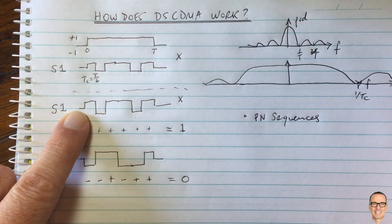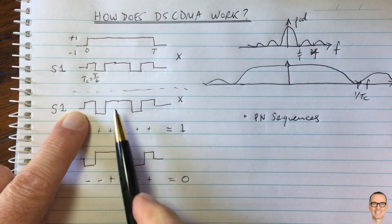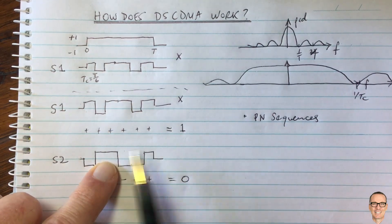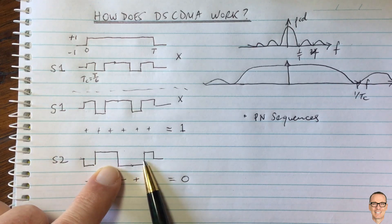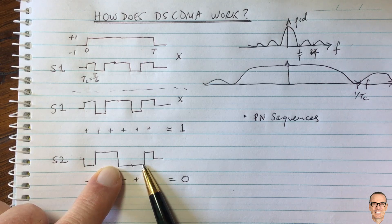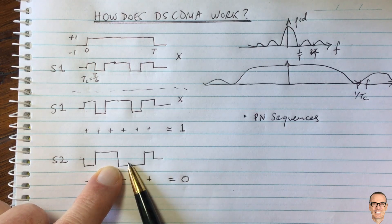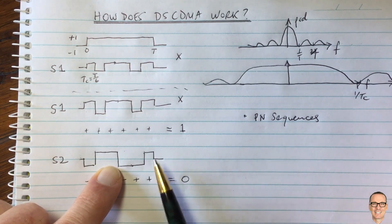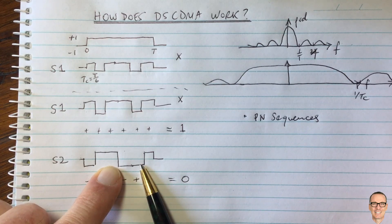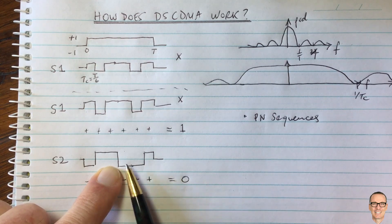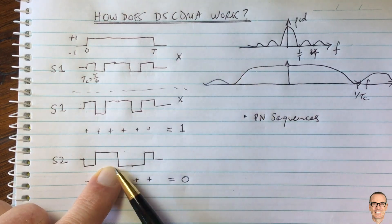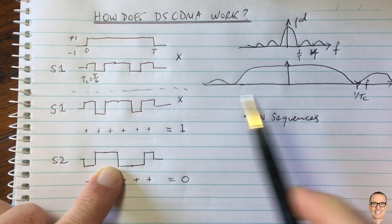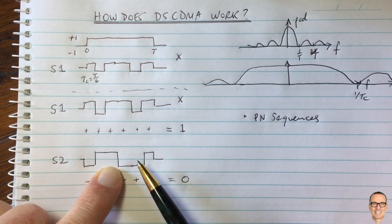With PN sequences, they're close to orthogonal but not exactly. If you've got a finite set of sequences handed out amongst users in a cellular system, you can get different sequences in neighbouring cells or cells one or two away. Those codes can be reused in those cells, but that can cause intercell interference in CDMA, just like normal intercell interference if you have FDMA with users on different carrier frequencies.